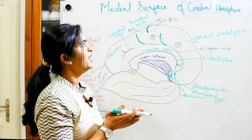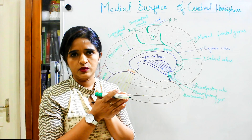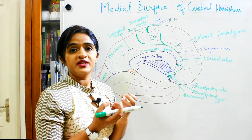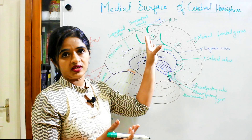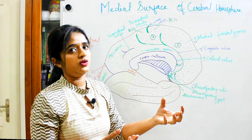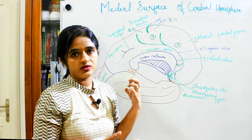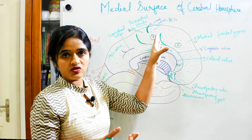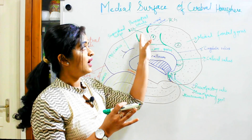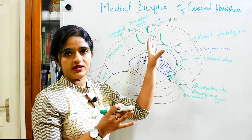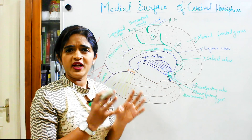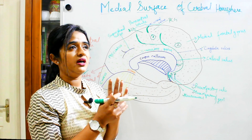The paracentral lobule is the region where the leg and perineum of the human body are represented in both the motor and sensory cortex. The precentral gyrus belongs to the motor region and the postcentral gyrus belongs to the sensory aspect. This is the region where the leg, foot, and perineum are represented in the cerebral cortex. The paracentral lobule is well developed in human beings and is said to be the highest cortical controlling station for defecation and micturition.